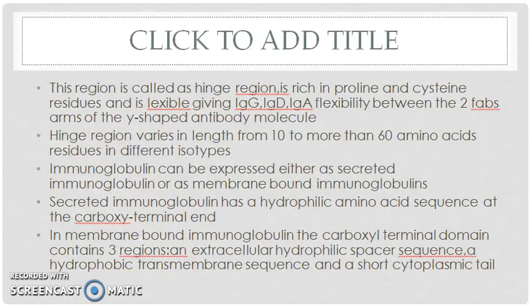That region is called the hinge region because it is rich in proline and cysteine residues and is flexible, giving IgG, IgD, and IgA flexibility between the two Fab arms of the Y-shaped antibody molecule. The hinge region varies in length from 10 to more than 60 amino acid residues in different isotypes.